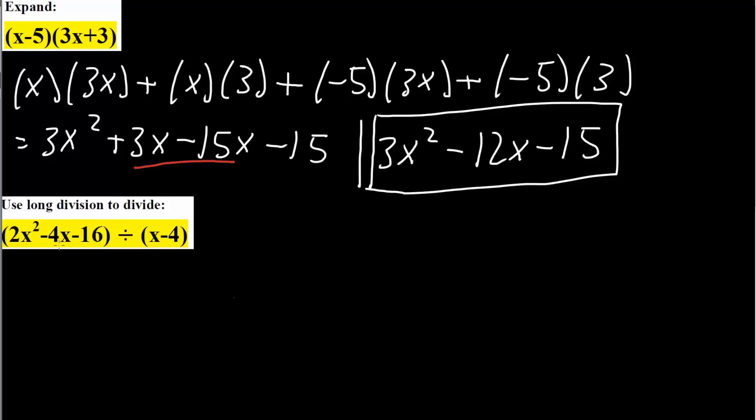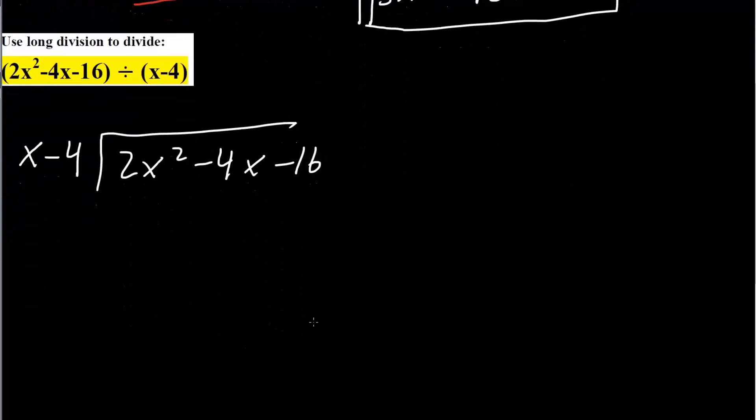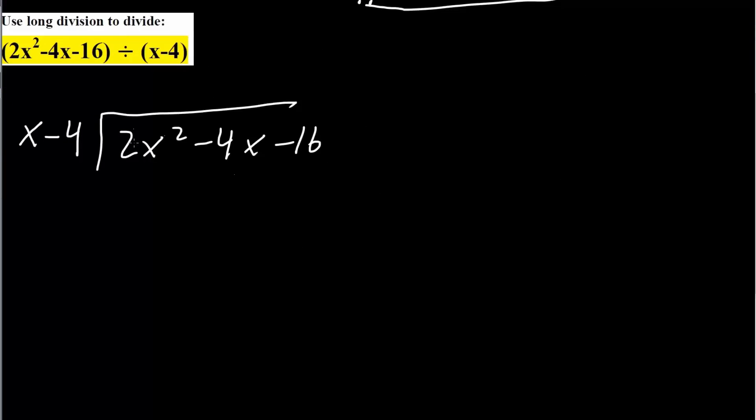The next problem we want to do is divide this polynomial by x minus 4. So let's write it out. So we have x minus 4. And we want to divide 2x squared minus 4x minus 16. So whenever we do like long division, we take the first term. First term is 2x squared. And we look here. How can we get 2x squared? The only way we can get 2x squared is if we multiply by 2x by this.